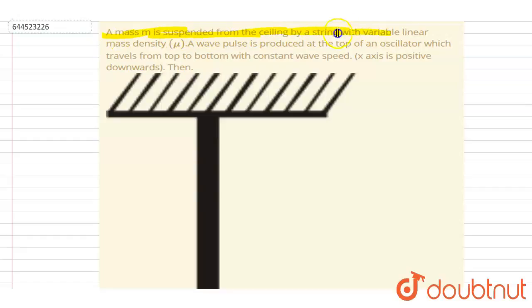A mass m is suspended from the ceiling by a string with variable linear mass density. A wave pulse is produced at the top of the oscillator which travels from the top to bottom with constant wave speed.